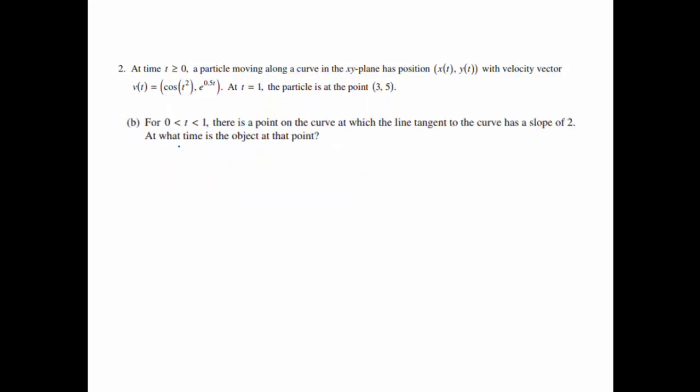Okay, B. For t between 0 and 1, there is a point on the curve at which the line tangent to the curve has a slope of 2. At what time is the object at that point? So pretty much it's just saying, when does the object have a slope of 2? So slope, we know using parametric, is dy/dt over dx/dt. And in this case, we already have the derivatives. So dy/dt will equal e to the 0.5t over dx/dt will be cosine of t squared.